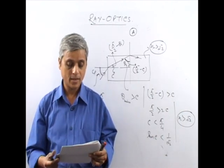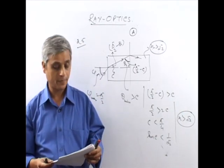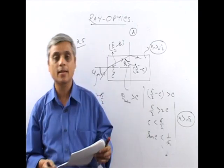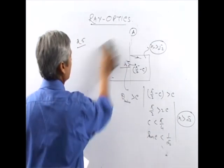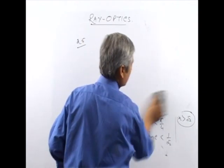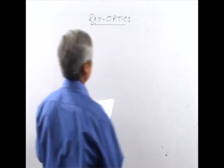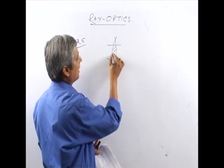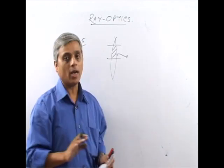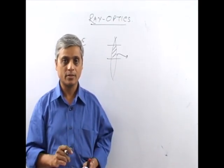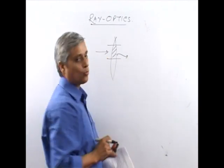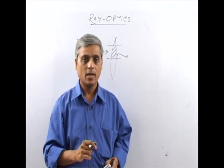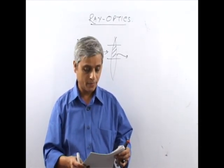Question number 26: A lens has focal length F. If half of the body of the lens is covered with black paper, the image produced by the lens will — now, each part of a lens, if the lens is cut perpendicular to its face, behaves as a complete lens and follows all rules of refraction.